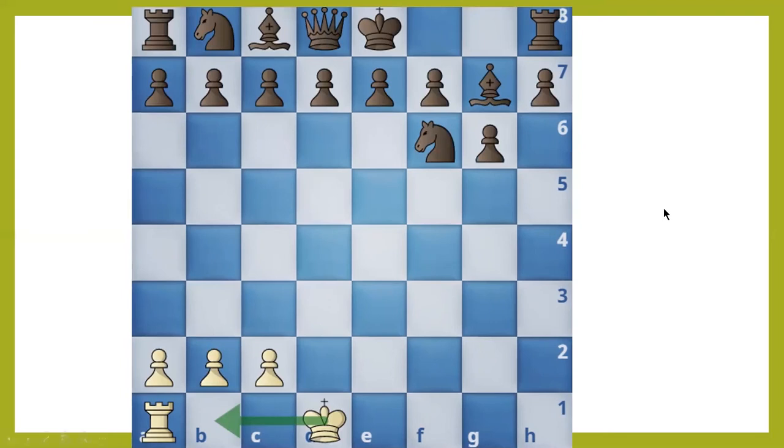Next thing is castling. Castling is usually done to move your king to the safest square. In this particular example,